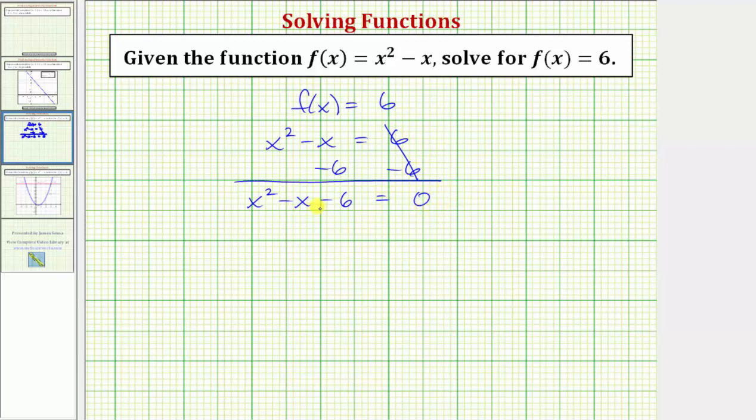Now we want to factor the left side. If it does factor, we'll have two binomial factors. Because the first term is x squared, it has factors of x and x. For the terms in the second positions, we want to find the factors of negative six that add to negative one, which would be negative three and positive two.